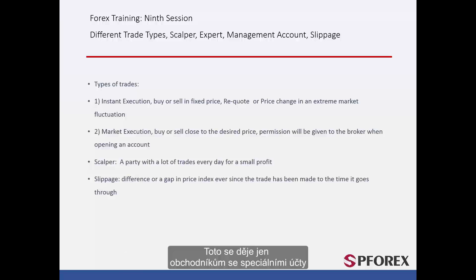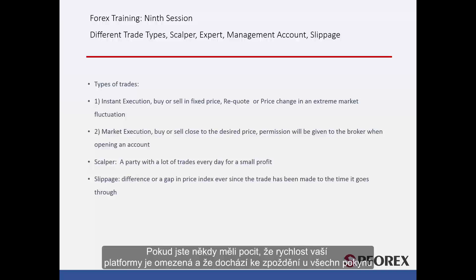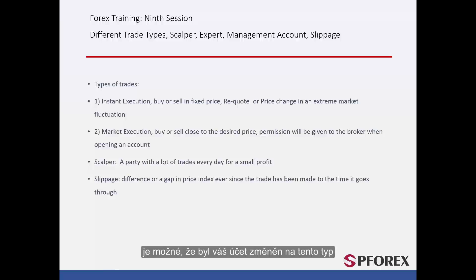This is only possible for some traders with special accounts. A broker can set a delay time for the account so that any order is influenced by this delay. This is a type of broker's policy. If you ever felt that the platform speed is reduced and you have a delay every time you are interested in placing an order, it is possible that your account has been changed to a slippage type.